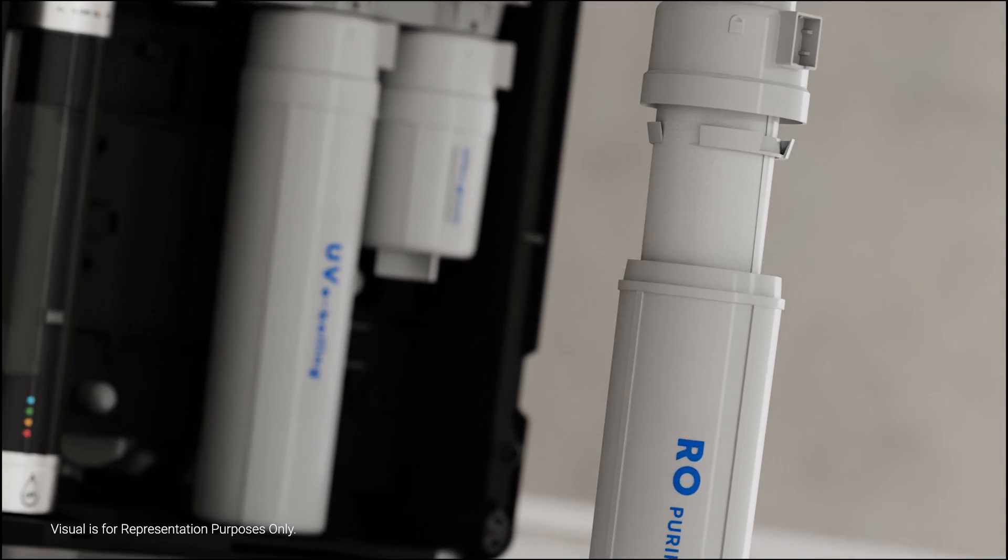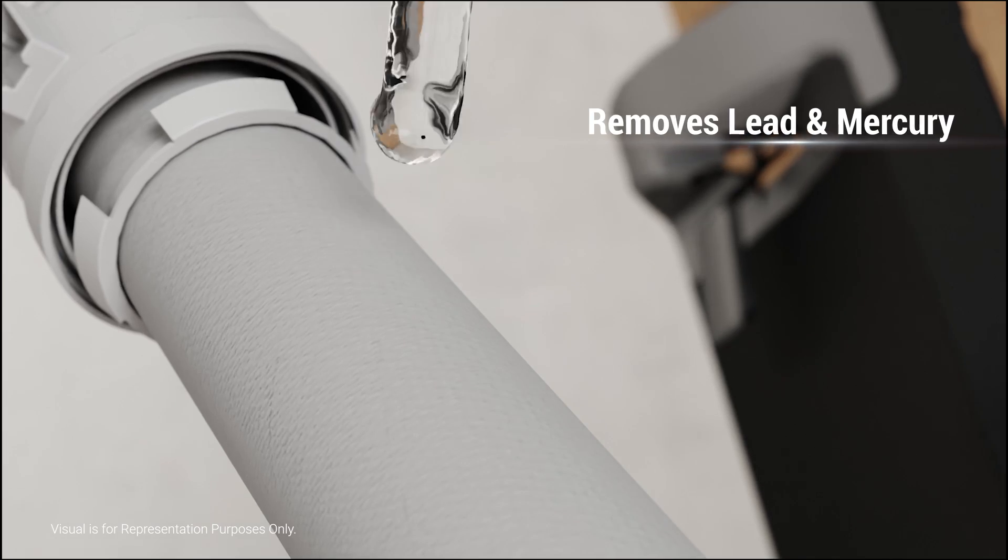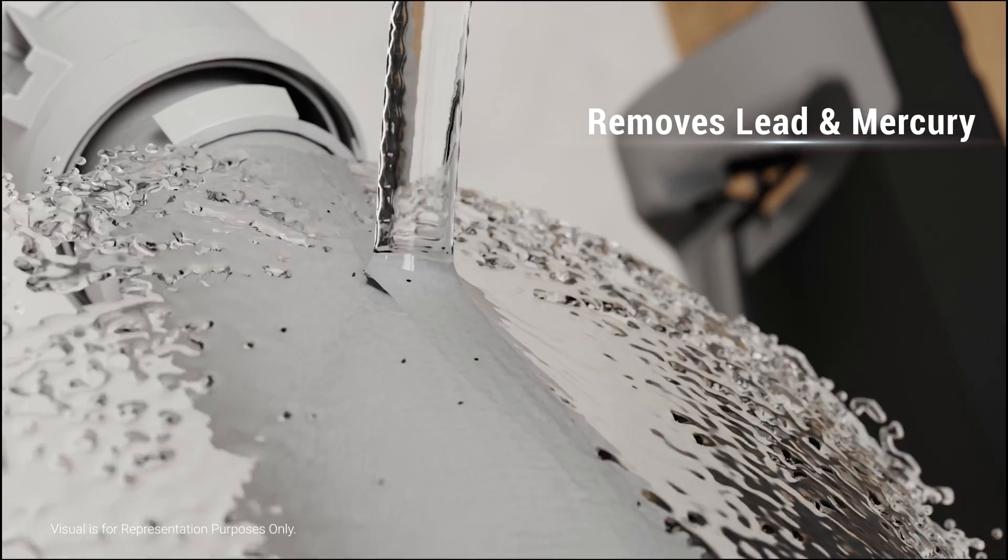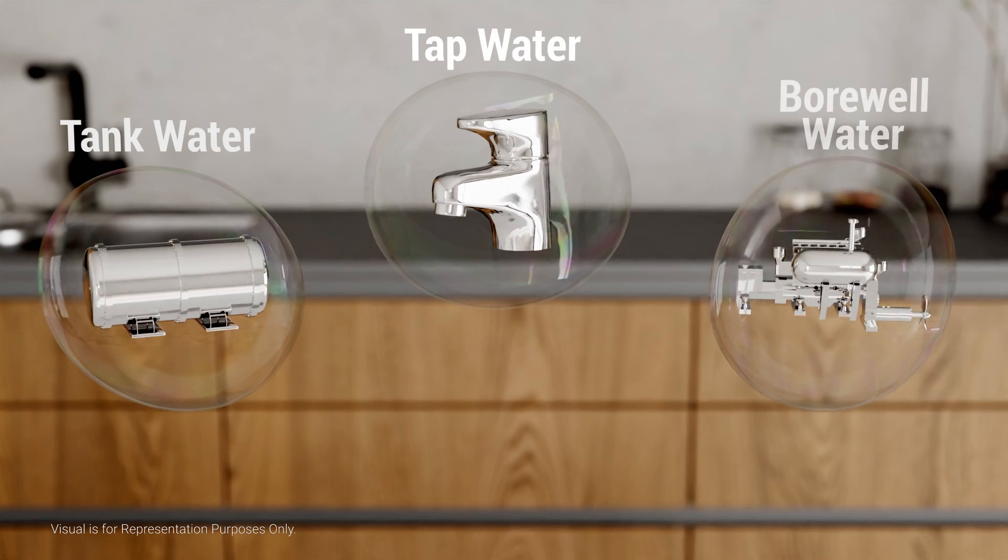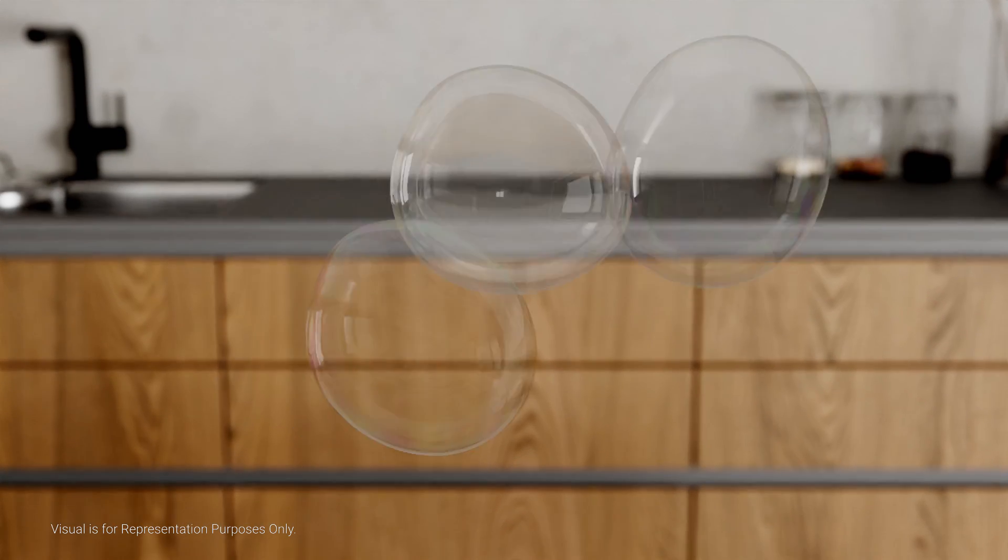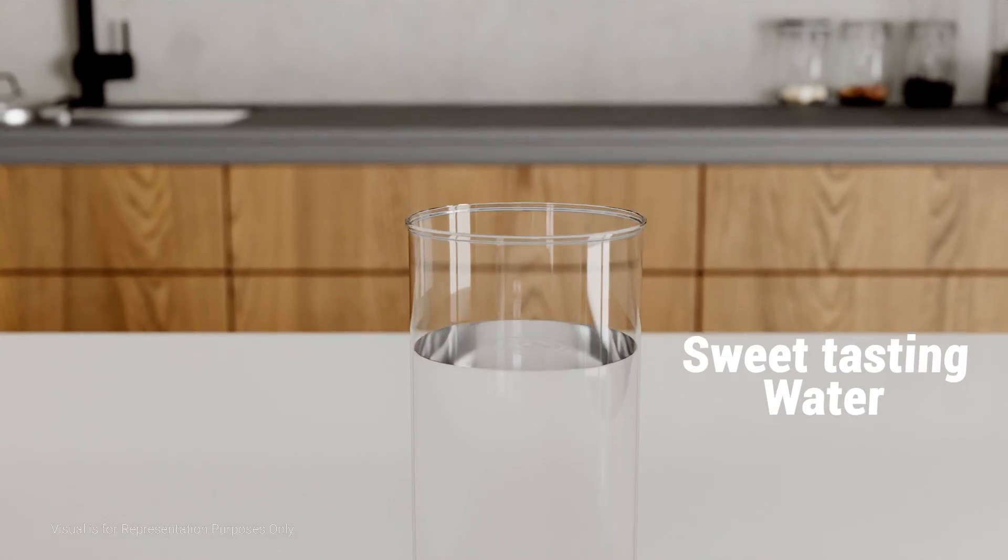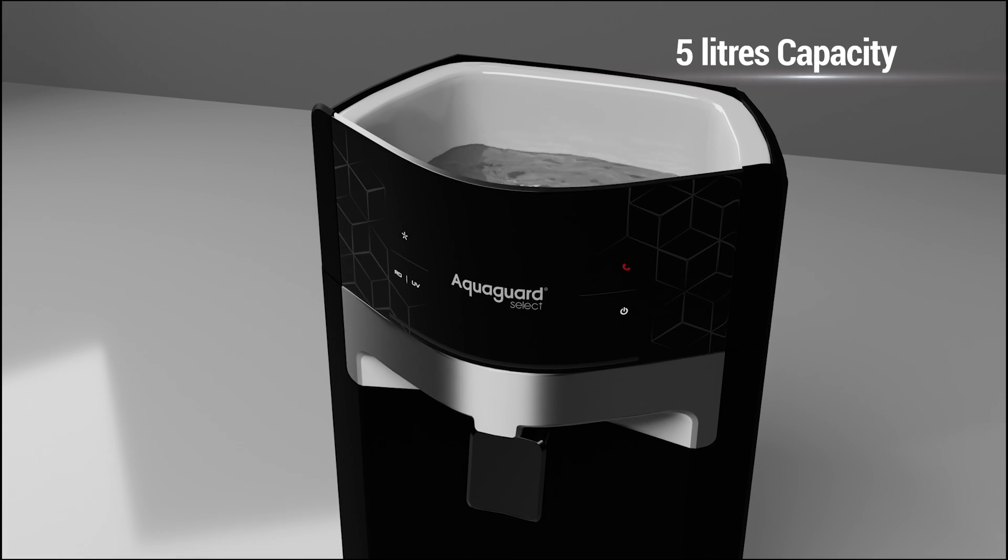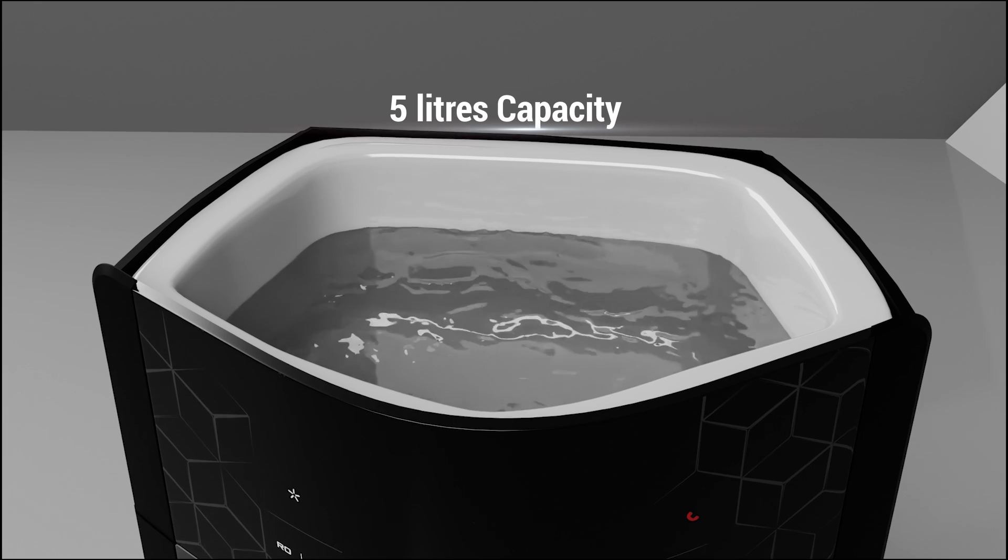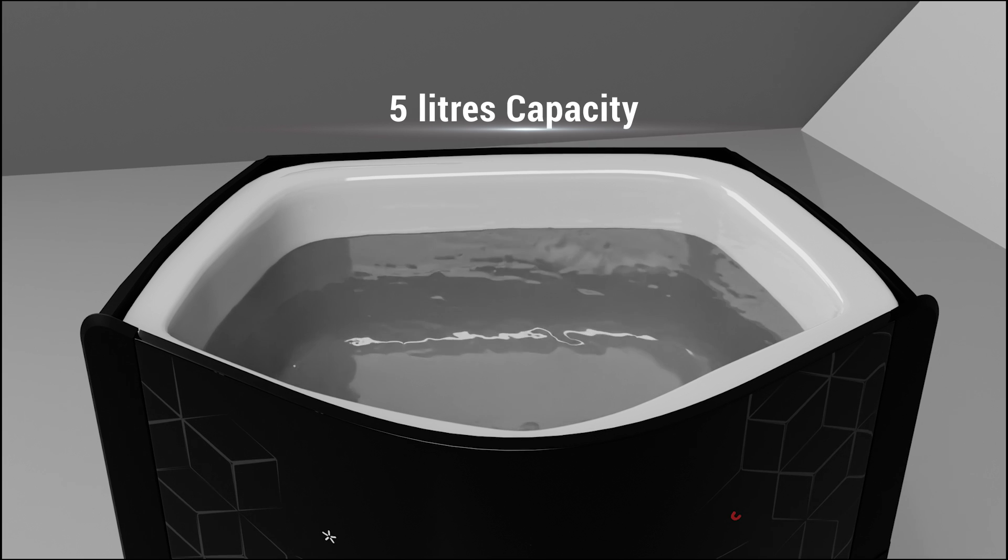Select Edge is certified to remove new age contaminants like lead and mercury from the water. If you're worried about the taste, let me tell you about the Advanced Taste Adjuster. This technology allows you to get sweet tasting water even when the water source changes from piped water to tanker water. In addition, it has a large storage capacity of 5 liters, ensuring you have healthy drinking water at all times.